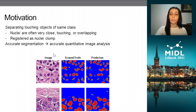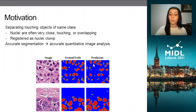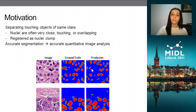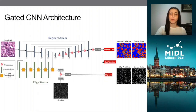The general problem is that nuclei tend to be registered as a single clump in these cases. So if you look here, the ground truth is showing that these two nuclei are touching, but the model predicts them as a single clump. This comes into play when we use segmentation maps to extract features such as the number of nuclei, their shape, and their size — all of which are affected by this error.